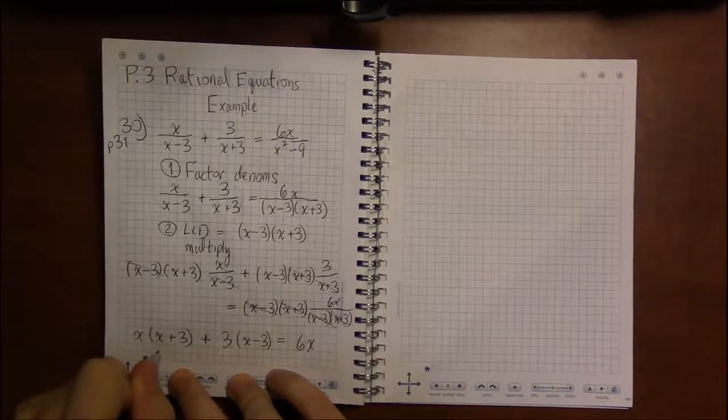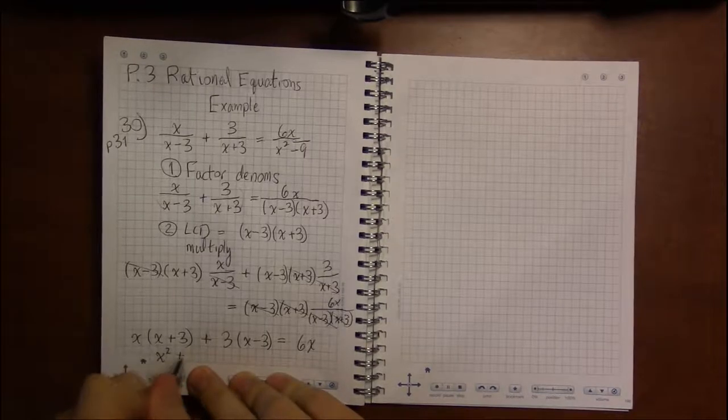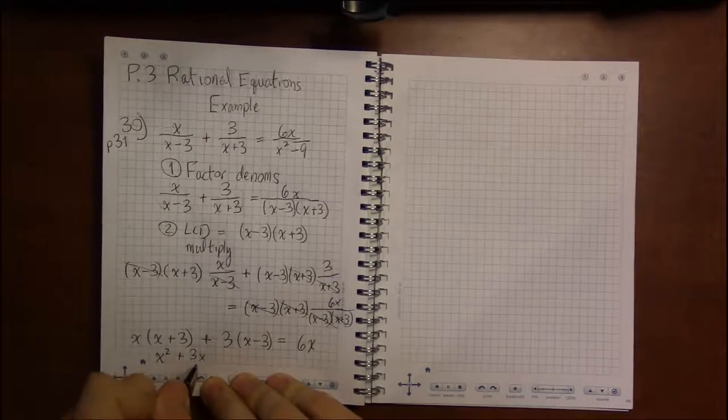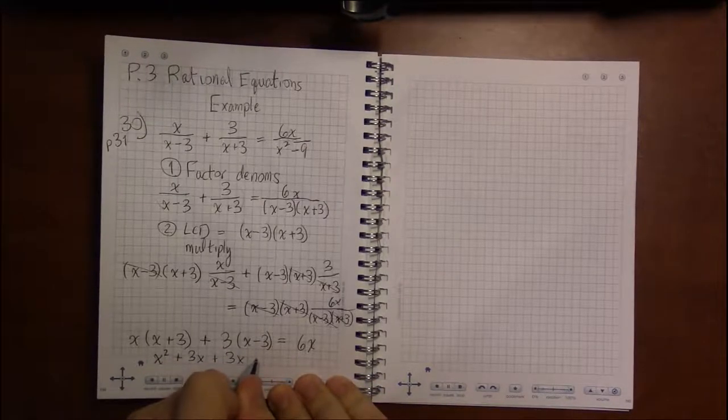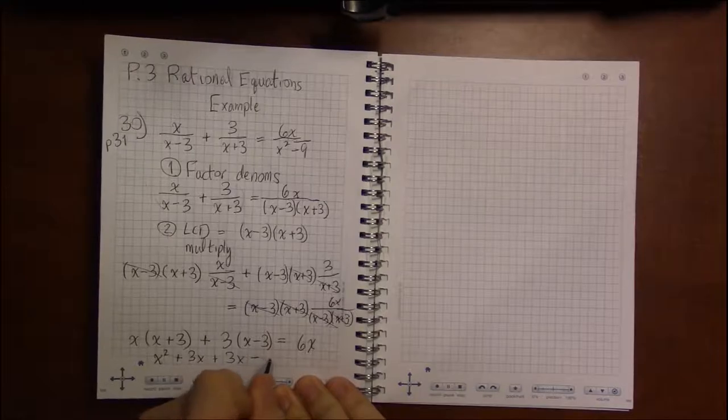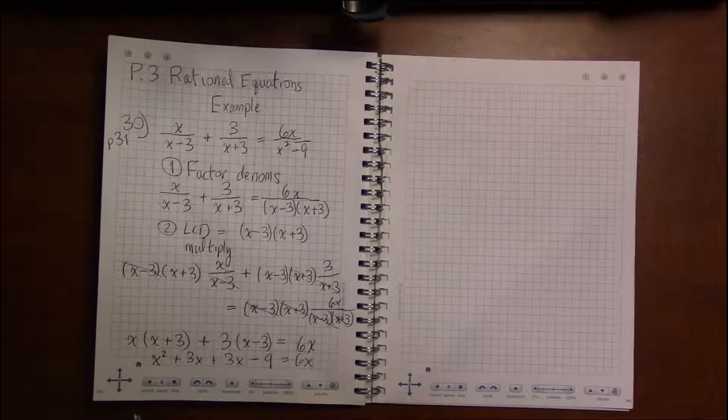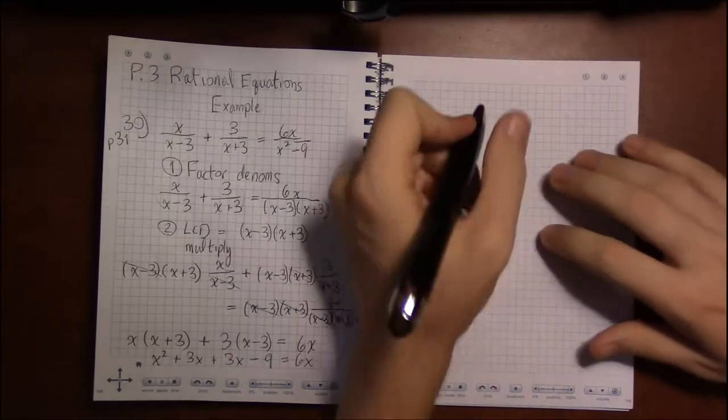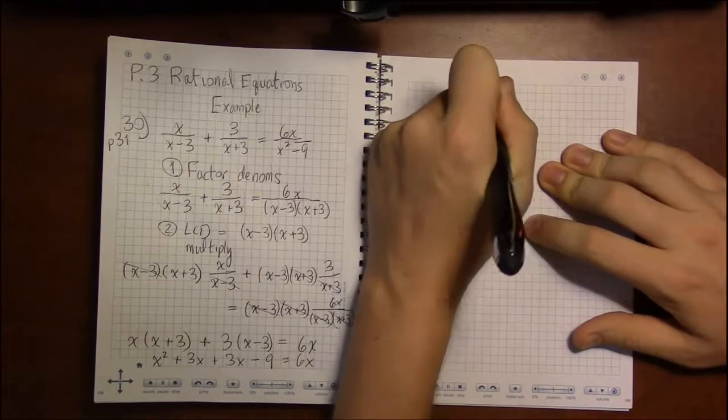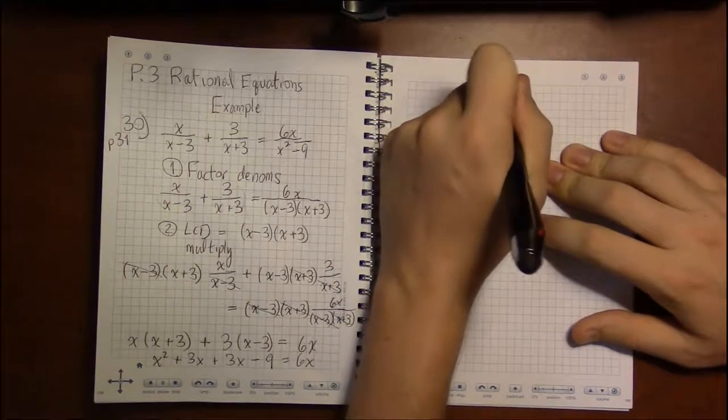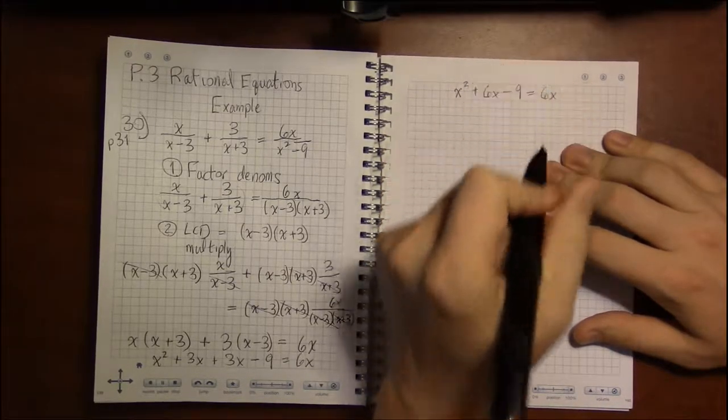So let's see. That's x times x is x squared. x times plus 3 is 3x. 3 times x is 3x. 3 times minus 3 is minus 9. And this is supposed to equal 6x. So we have, let's see. On the left, we can combine the two 3x's. 3x plus 3x is 6x. So we get x squared plus 6x minus 9. And on the right, we still just have 6x.